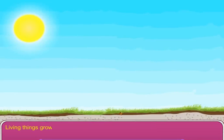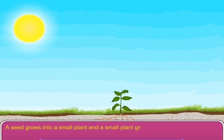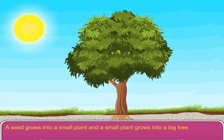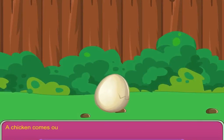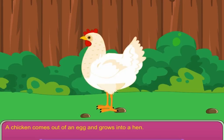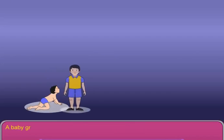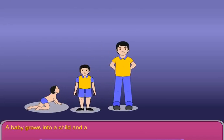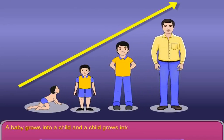Living things grow. A seed grows into a small plant and a small plant grows into a big tree. A chicken comes out of an egg and grows into a hen. A baby grows into a child and a child grows into a man.